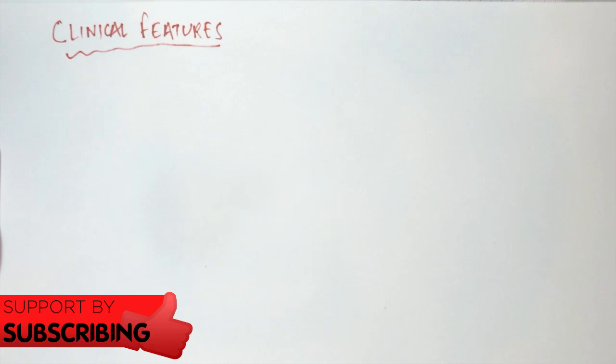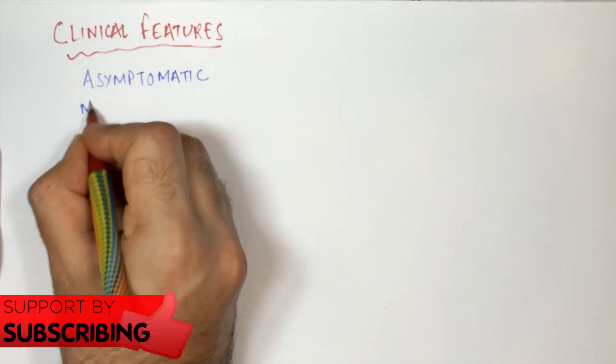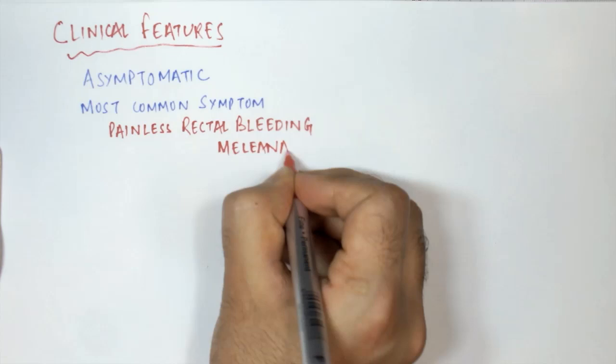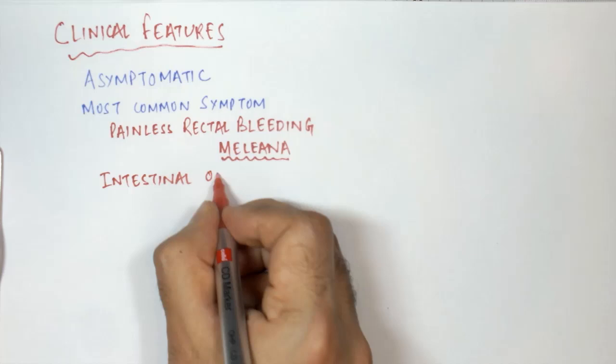Clinical features of Meckel's Diverticulum: Most patients having Meckel's Diverticulum are asymptomatic. But if they present, the most common presenting complaint is painless rectal bleeding, which can be in the form of melena. Other complaints in Meckel's Diverticulum can be due to intestinal obstruction.